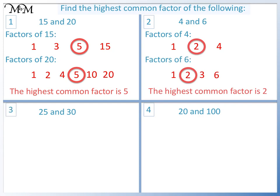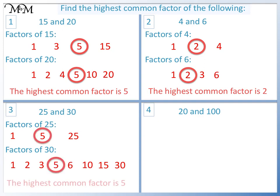Question 3: The factors of 25 are 1 times 25 and 5. The factors of 30 are 1 times 30, 2 times 15, 3 times 10, and 5 times 6. The highest common factor is 5.